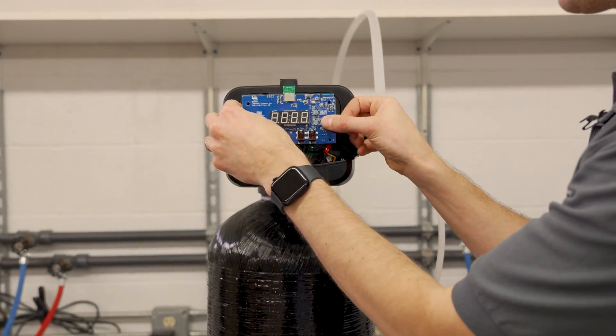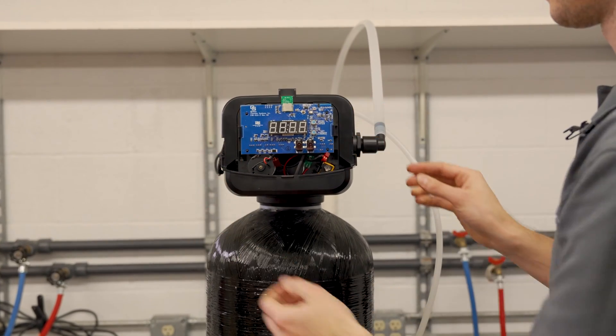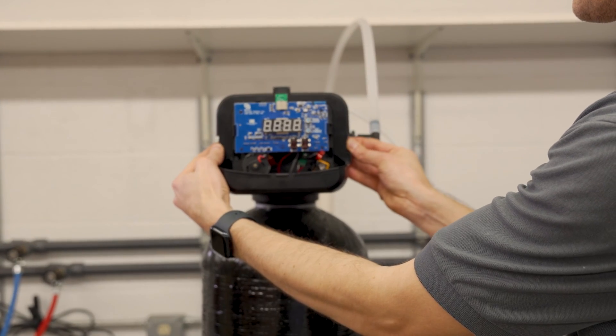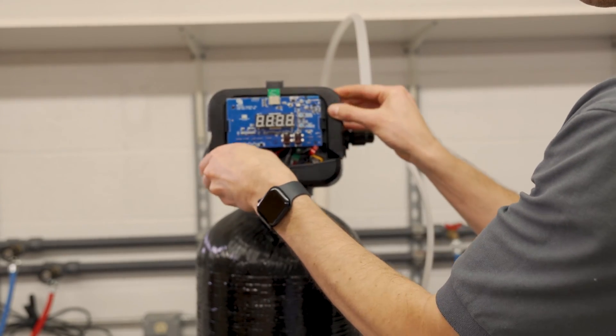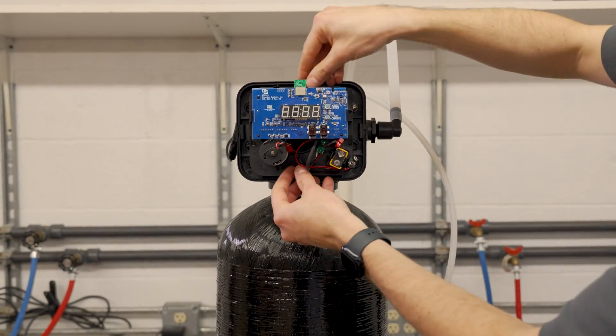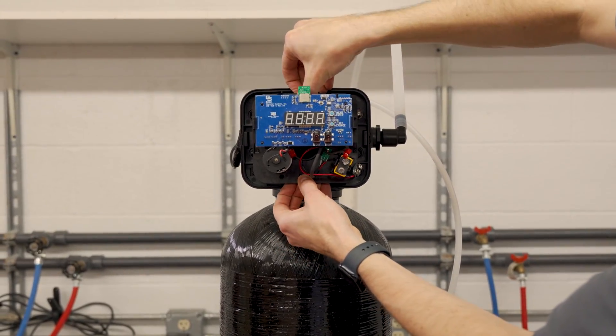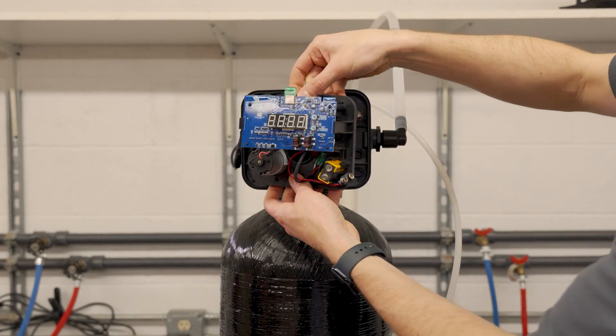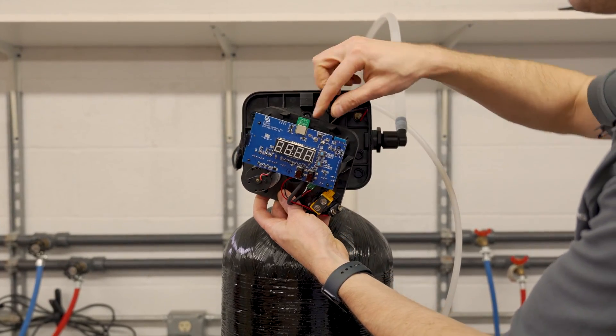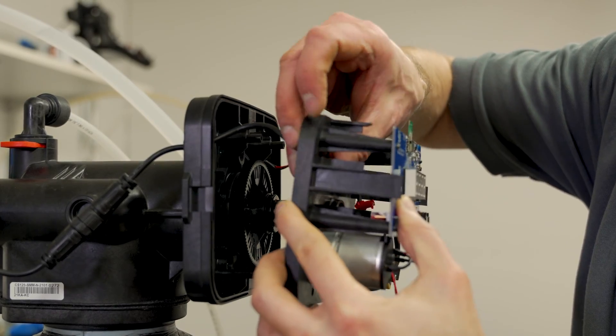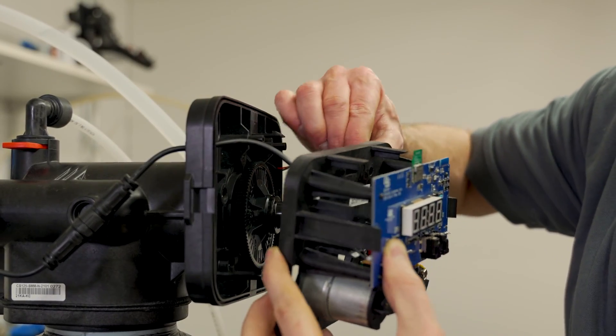After you do that, you can put the circuit board back on and we're going to remove this front cover and then remove the circuit board mount plate. The two cables that you disconnected from the power supply and the motor will need to be fished through.